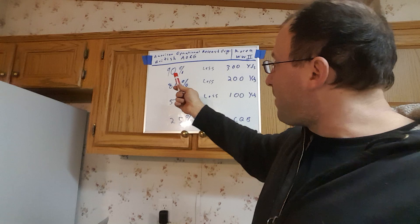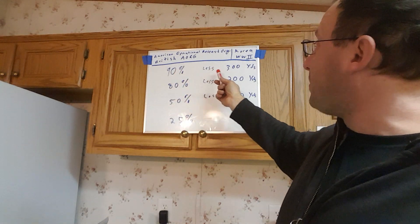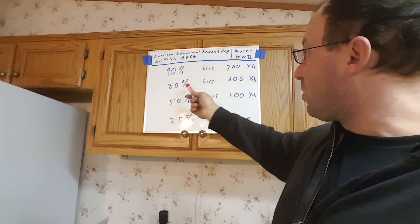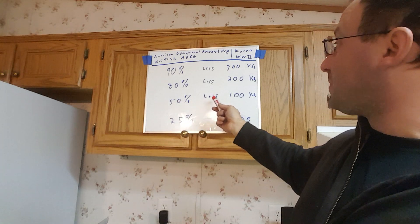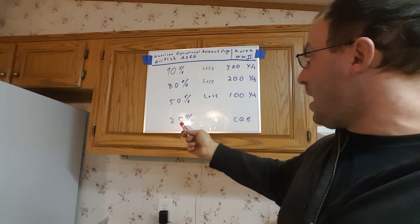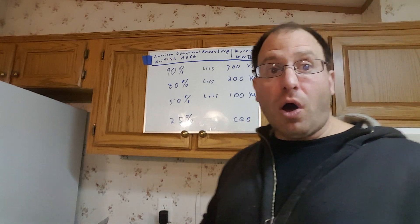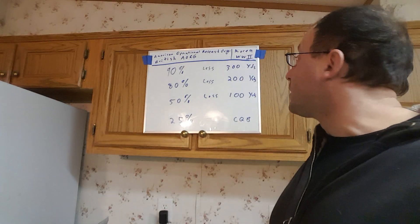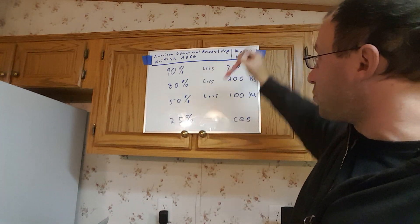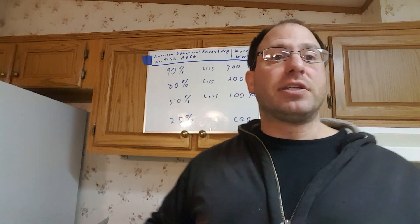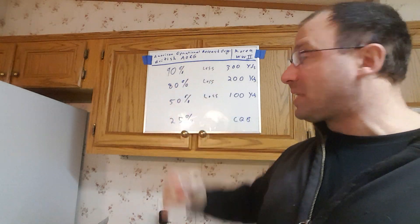So what they found was that 90% of engagements happened at less than 300 yards. 80% of engagements happened at less than 200 yards. 50% of engagements happened at less than 100 yards and 25% of engagements were close quarter combat. This is some really interesting information for us. We can see here that 90% of the engagements are going to be less than 300 yards, which tells us that AR-15s, AK-47s would be suitable for 90% of these engagements.